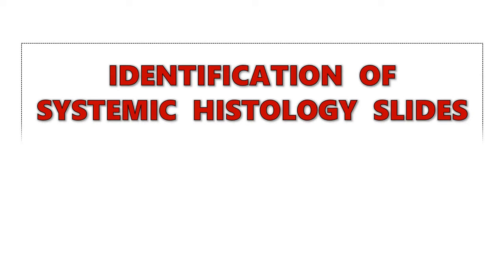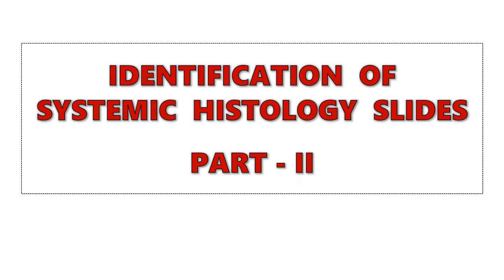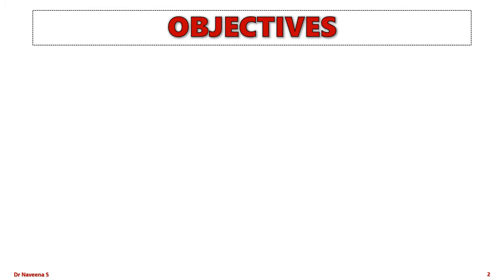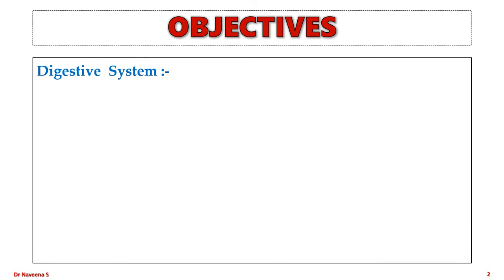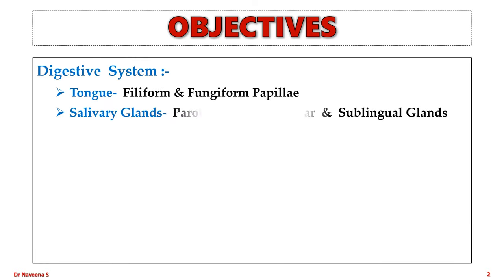Welcome to my video tutorial on identification of systemic histology slides, part 2. In this video, we will learn the slides belonging to the digestive system. They are tongue with filiform and fungiform papillae, and three slides of salivary glands: